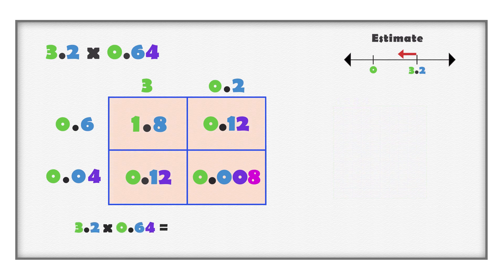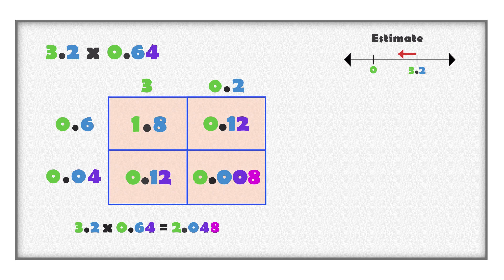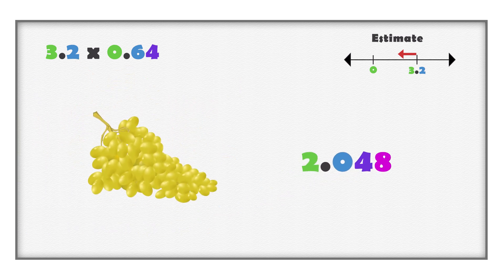Add all the values together to determine the total product of three and two tenths multiplied with sixty-four hundredths. Remember, when adding decimal values, it is important to add together digits of the same place value. Three and two tenths multiplied with sixty-four hundredths is equal to two and forty-eight thousandths. The answer is the total cost of the grapes: two dollars and forty-eight thousandths of a dollar.